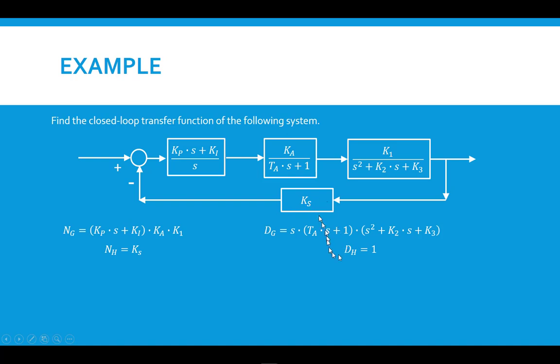And if we apply those to our formula that we had before, NG, DH is 1, so it doesn't appear here. So this is simply the same as that, over DG, which is all of this, and it's times DH, but DH is 1, so that doesn't appear either. Plus NG, so that's this here, NH, which is the KS. So this winds up being our closed-loop transfer function for this rather complicated control loop.